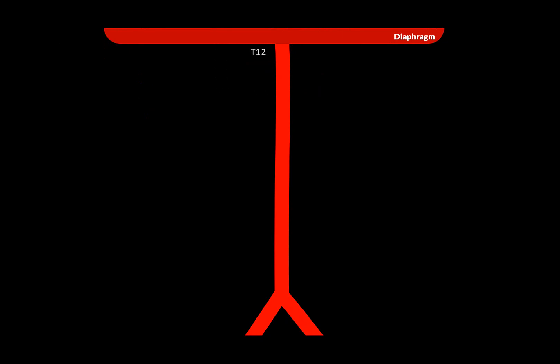The abdominal aorta extends from the lower border of the 12th thoracic vertebrae, T12, to the 4th lumbar vertebrae, L4, and then it divides into the right and the left common iliac arteries. Occasionally, you may find it continuing between them as the median sacral artery, supplying the coccygeal and the piriform muscle.